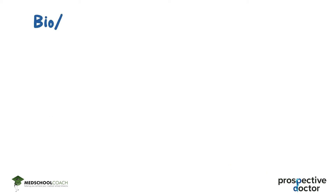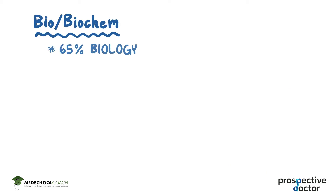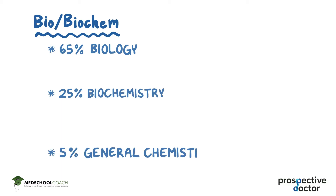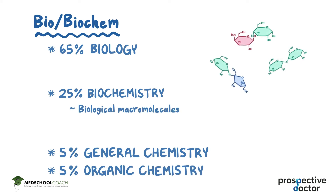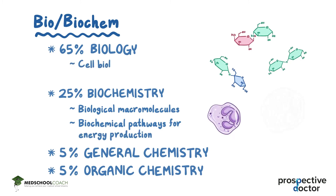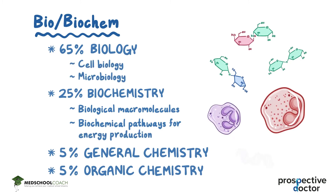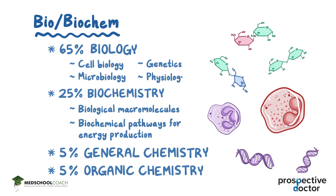The Bio-Biochem section consists of 65% Biology, 25% Biochemistry, 5% General Chemistry, and 5% Organic Chemistry. Topics in this section include Biological Macromolecules like Carbohydrates, Proteins, Lipids, and Nucleic Acids, Biochemical Pathways for Energy Production, Cell Biology, Microbiology, Genetics, and Physiology.